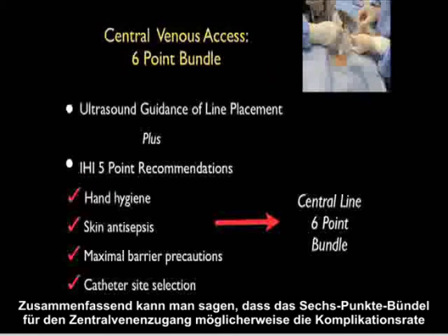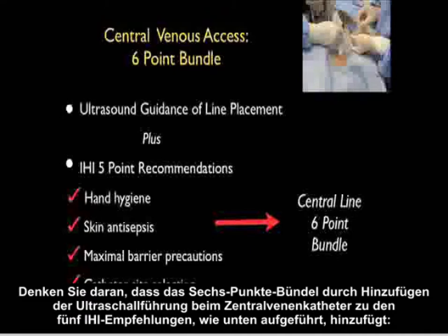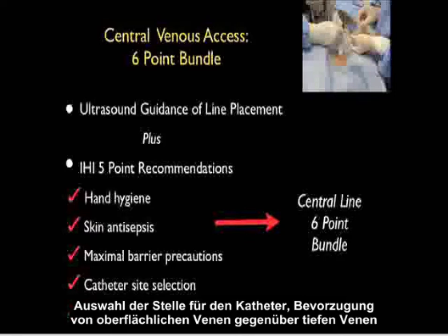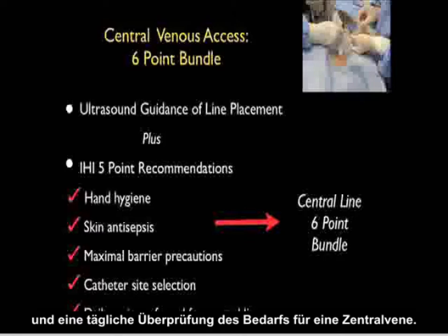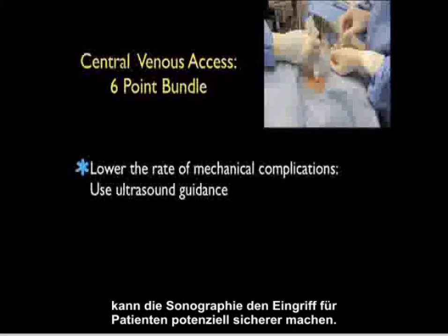In conclusion, the central venous access six-point bundle can potentially decrease the complication rate for patients undergoing this procedure. The six-point bundle is formed by adding ultrasound guidance to the IHI five-point recommendations: hand hygiene, skin antisepsis, maximal barrier precautions, catheter site selection favoring high lines over low lines, and daily review of the need for a central line. Adherence to this bundle can make the central venous access procedure a safer one for our patients.